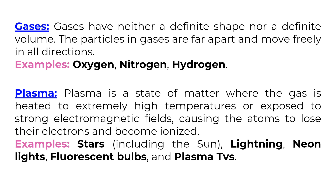Plasma is a state of matter where gas is heated to extremely high temperatures or exposed to strong electromagnetic fields, causing the atoms to lose their electrons and become ionized. Examples include stars (including the sun), lightning, neon lights, fluorescent bulbs, and plasma TVs.